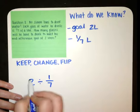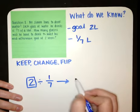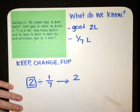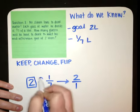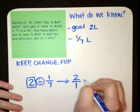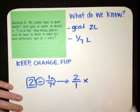So we're going to keep the first one, which we know we're going to turn into a fraction by writing it over one, change our division into multiplication, and then flip our last fraction.